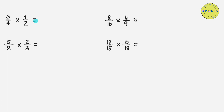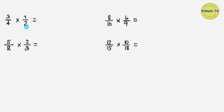First example, let's multiply 3 fourths times 1 half. To multiply fractions, just multiply the numerators and multiply also the denominators. Then express the answer in lowest term if possible.